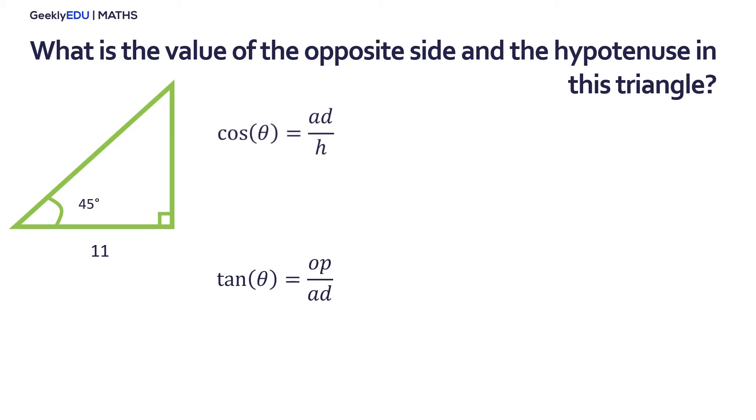The first step is to clear the hypotenuse in this function and evaluate using a calculator the value of this ratio. And now we are going to use the tangent function to know the value of the opposite side. Again, we have to clear the opposite side and evaluate. And these are the values for the sides of the triangle.